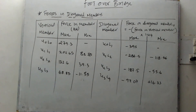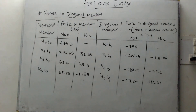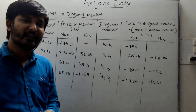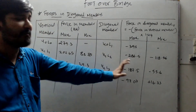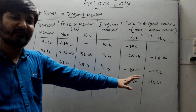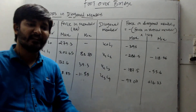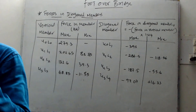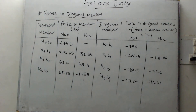The shape of the influence line diagram for diagonal members is the same as for vertical members, but opposite in nature. This is an important point to remember. With this, we have completed our force calculations.